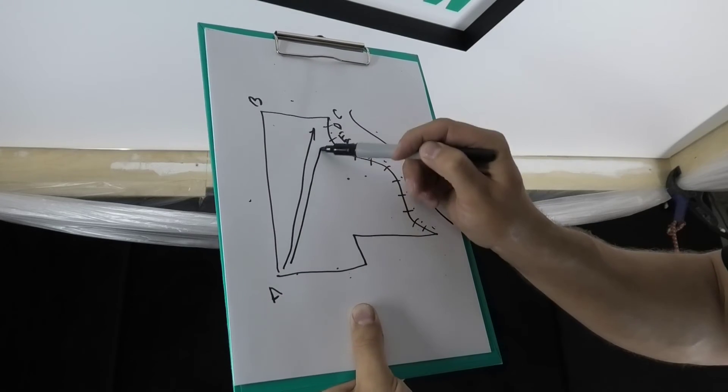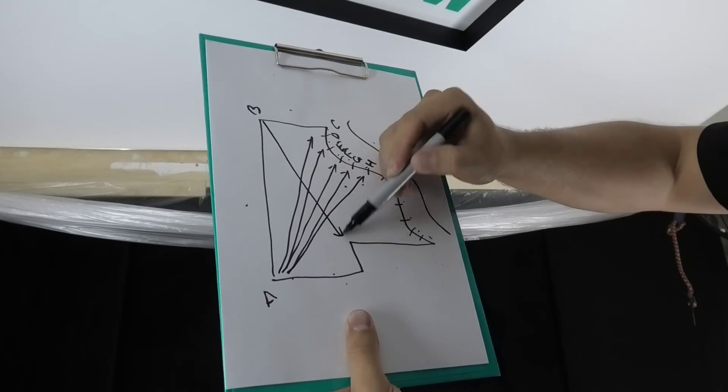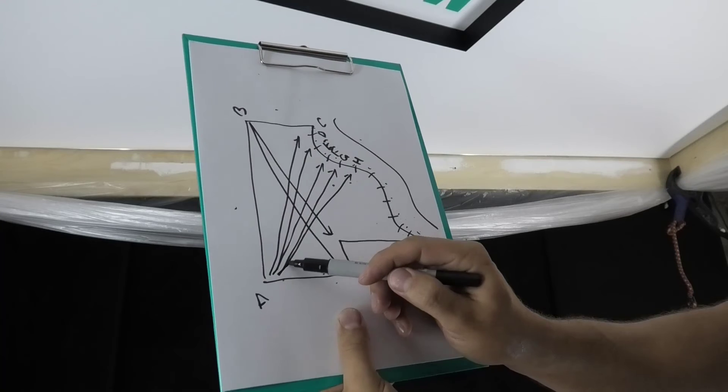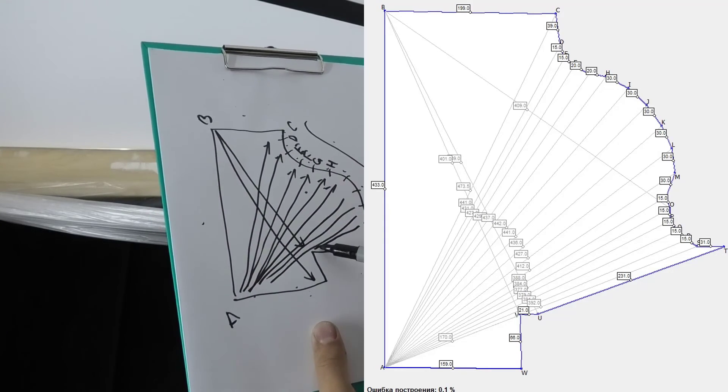Select a point in the room from which a large number of diagonals can be measured. For a more accurate determination of the dimensions of the ceiling, we take the dimensions from different points in the room. This is how the stretch ceiling diagram looks like in the program.